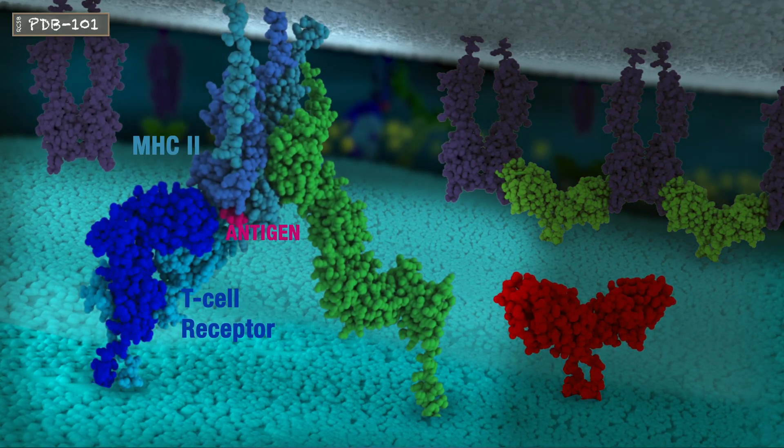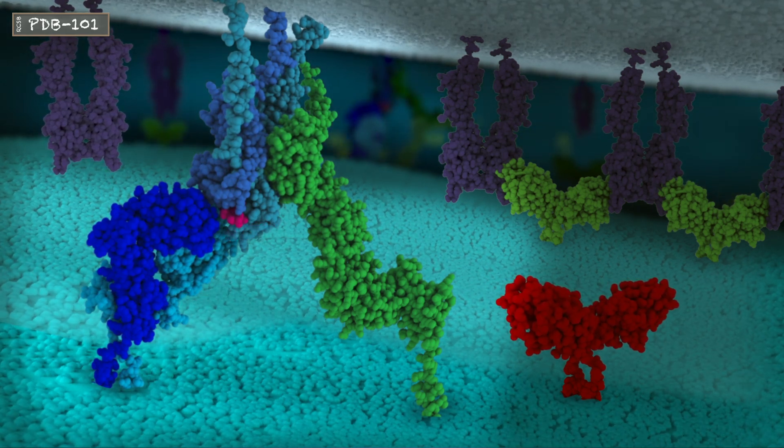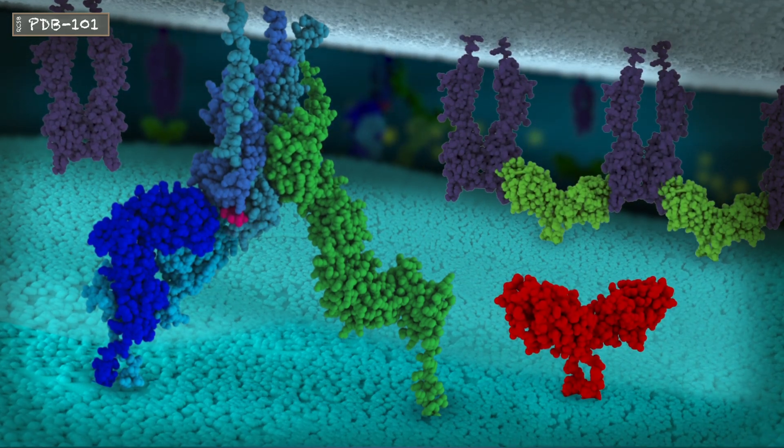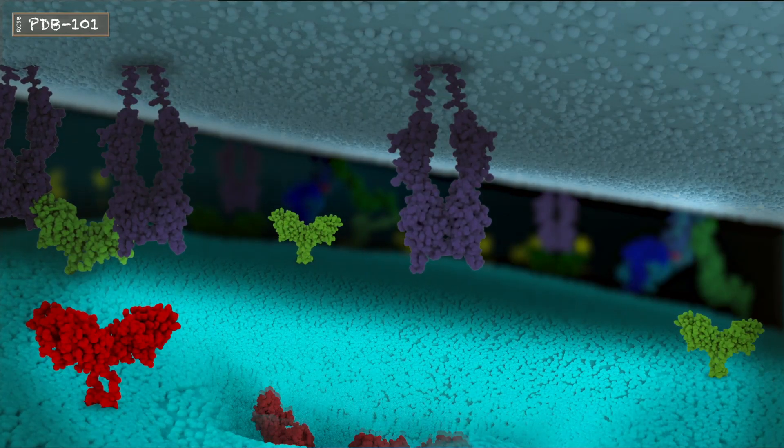the T cell receptor may interact excessively with the antigen MHC complex. When this occurs, CTLA-4 proteins are brought up to the surface of the T cell.